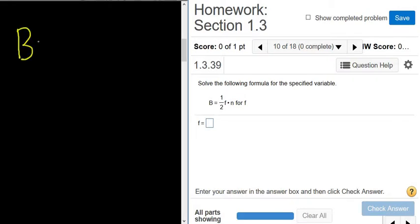We have big B equals 1 over 2f, and the dot means multiplication, so times n. We have to solve for f.